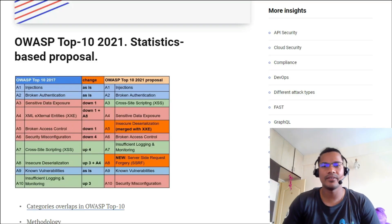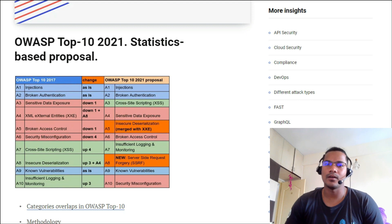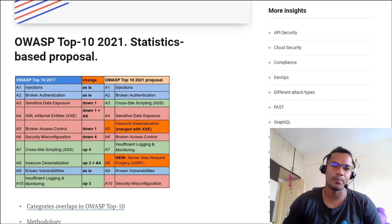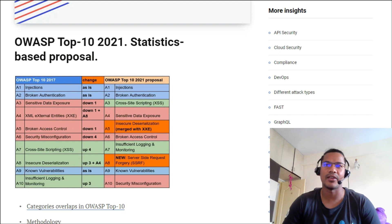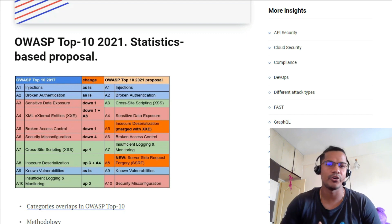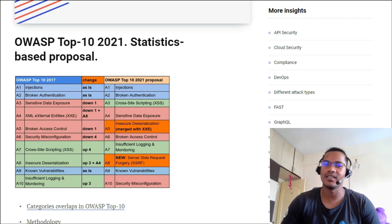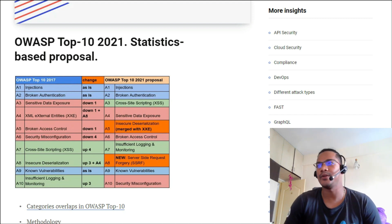Welcome to another video. In this video we are going to look at the OWASP Top 10 2021 statistical-based proposal. We'll be talking about what is proposed for OWASP Top 10 2021, what the changes are, and whether it was necessary or done in the right or wrong way. OWASP is basically an open web application security project — an online community that makes freely available articles, methodology, documentation, and all things related to the application security field. If you haven't visited www.owasp.org, please go check it out — there's a ton of content and a lot of good articles related to application security.